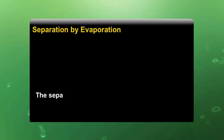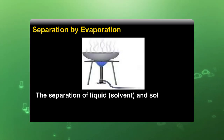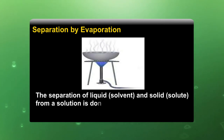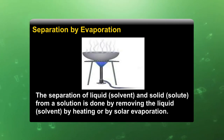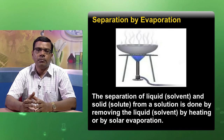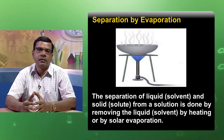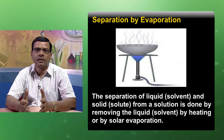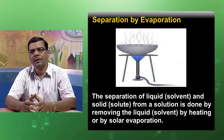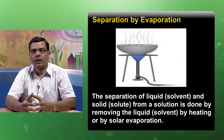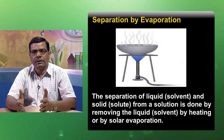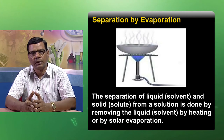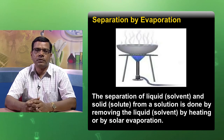Separation by evaporation: the separation of solute from a solution is done by removing the liquid solvent by heating or by solar evaporation. In this method, water is volatile but the solute particle is not volatile. On heating, only the water evaporates and the solid solute settles at the bottom. If a mixture contains one volatile and one non-volatile component, we use separation by evaporation.